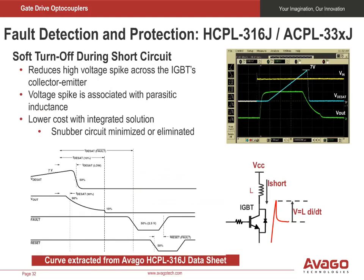Here we show why a soft shutdown is desirable. Without a soft shutdown, the abrupt turn-off of an IGBT or power MOSFET will generate a high dV/dt voltage spike when an inductive load is present. This voltage overshoot may damage the power switches. Avago's integrated solution lowers system component count and reduces cost.